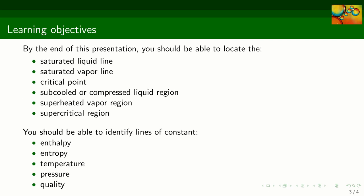A Mollier diagram also has several auxiliary lines. By the end of this presentation, you should be able to locate the saturated liquid and saturated vapor lines, the critical point, the subcooled or compressed liquid region, and the superheated vapor region.